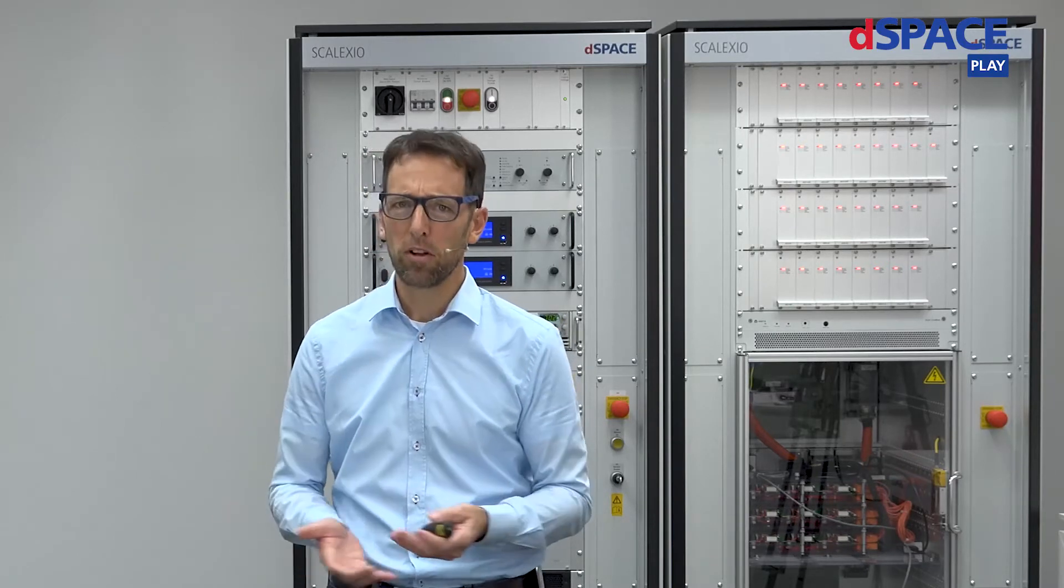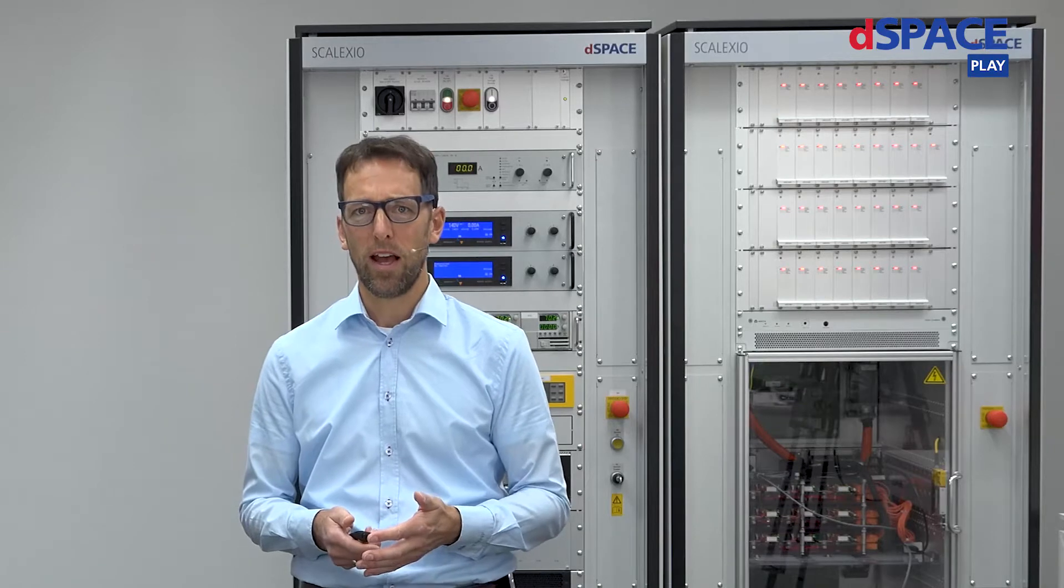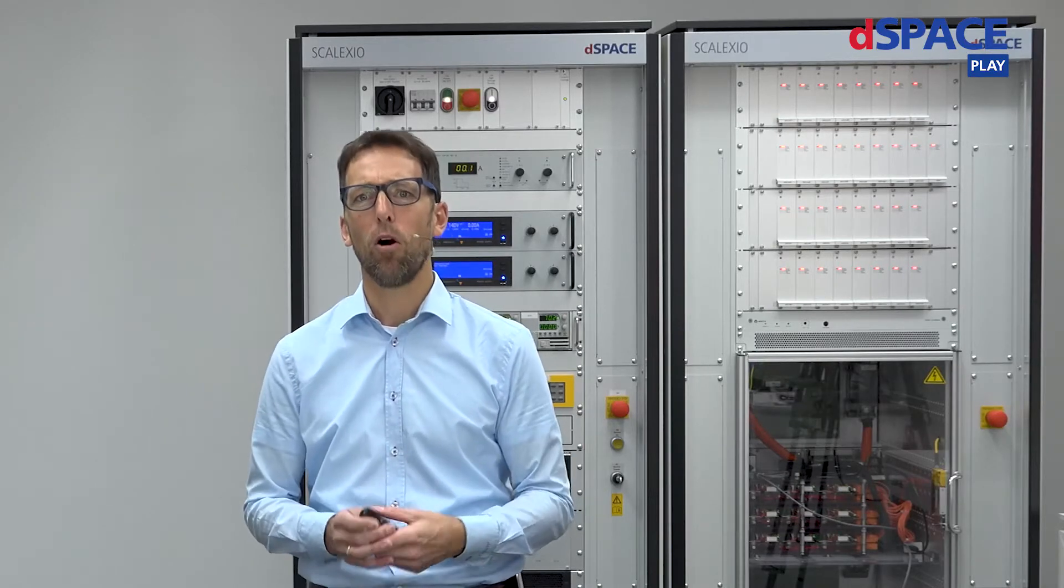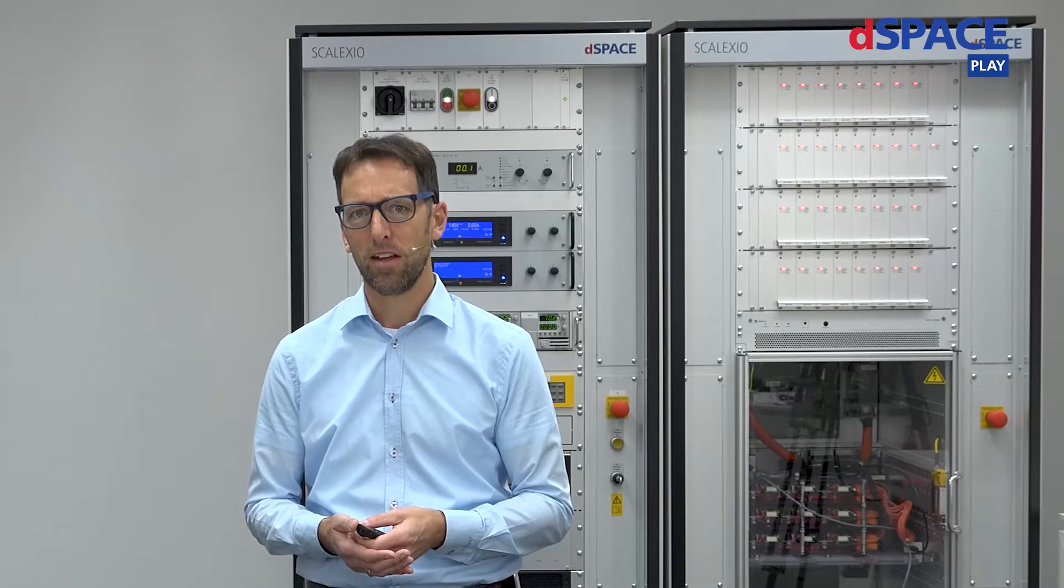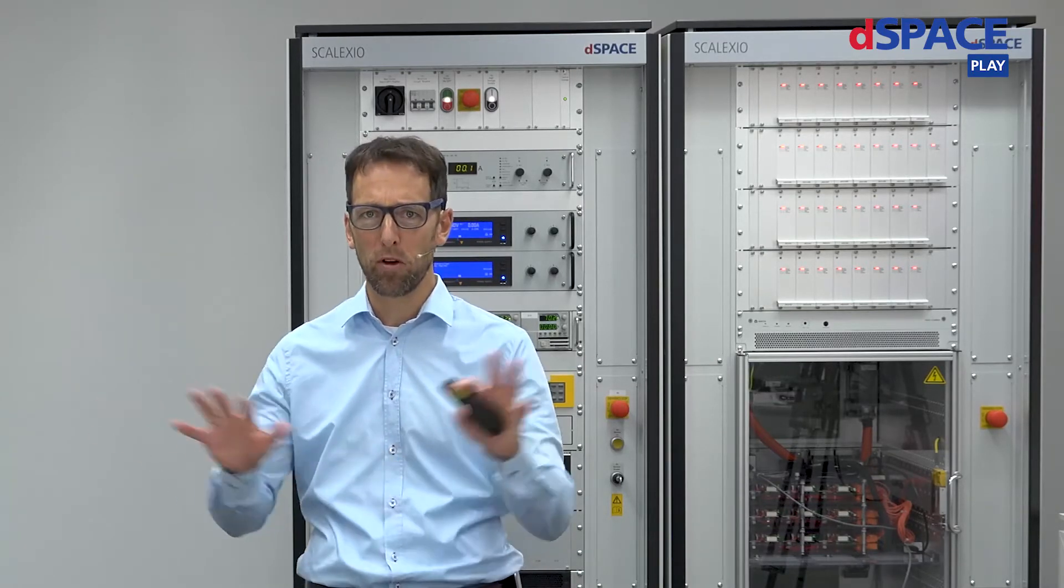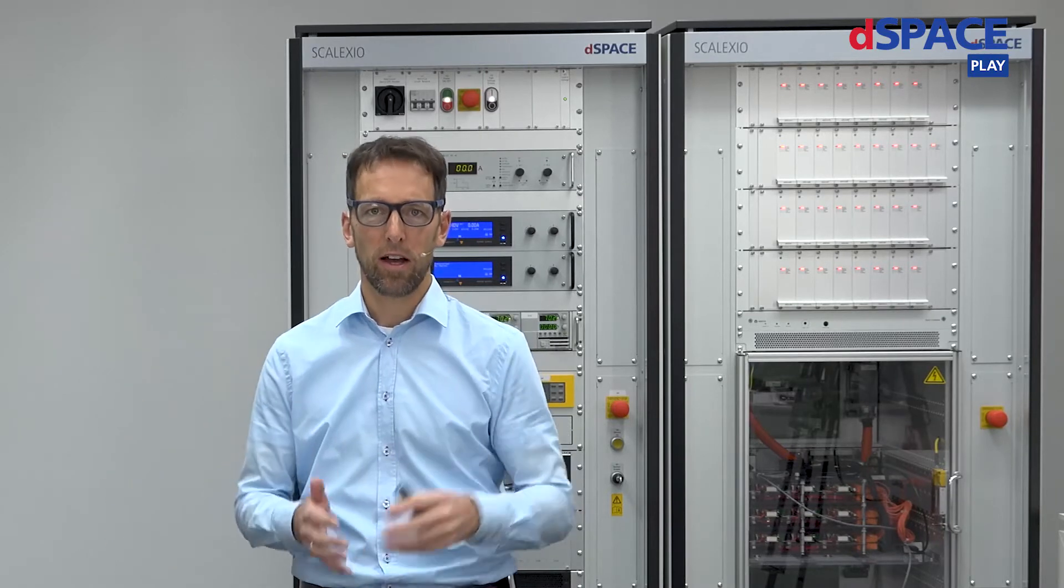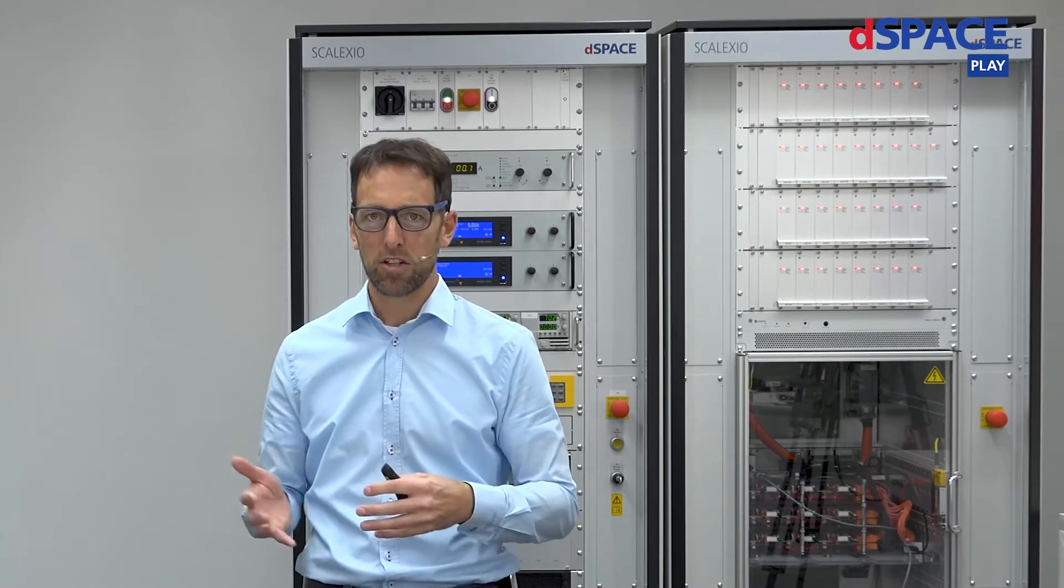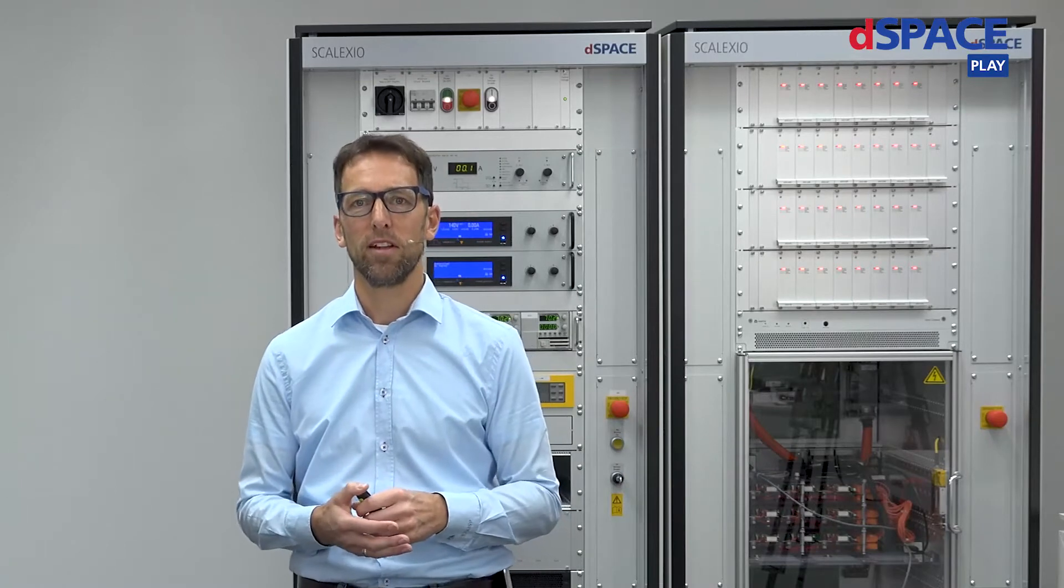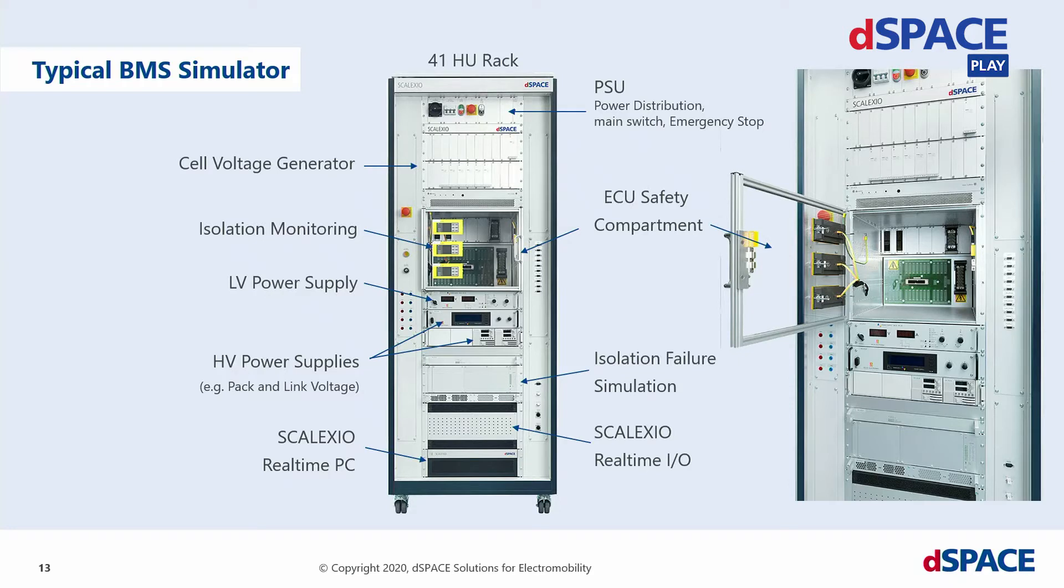But not only does the voltage has to be simulated. There is also the current of the battery that is interesting for the battery management system. And we have to satisfy all the inputs of the BMS. So, other inputs are related to high voltage probes separated and distributed among the vehicle. For example, at the inverter, at the battery, at the charging point, wherever you have got some kind of high voltage measurement. So, let's have a closer look to the hardware.